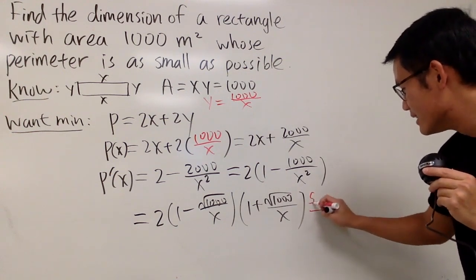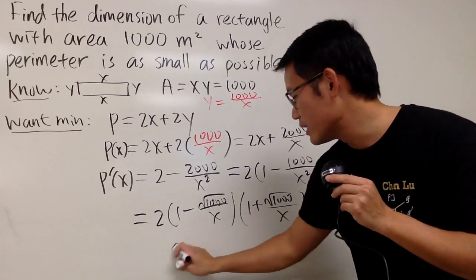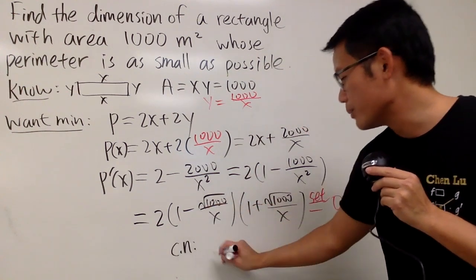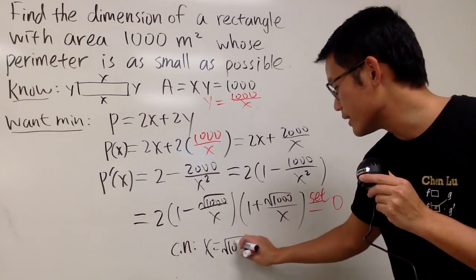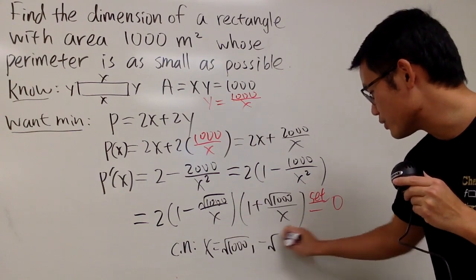And then, of course, we can go ahead, set this guy to be 0. From here, we can get our first critical number, which is going to be x equals square root of 1000, right here. And then this right here, of course, we get the negative square root of 1000.